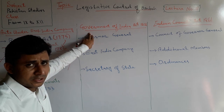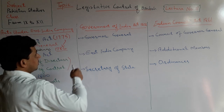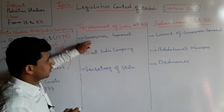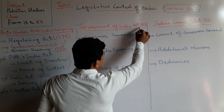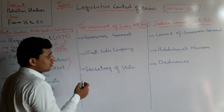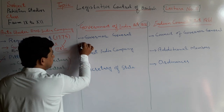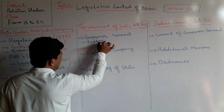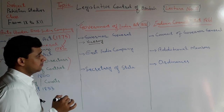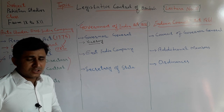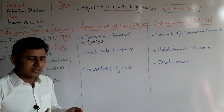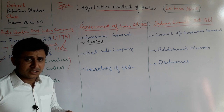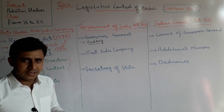After the 1857 War of Independence, the British formed their own acts and laws. According to the Government of India Act 1858, the Governor General was given another name and title: Viceroy. The Governor General was now under the Crown, whereas before this act the Governor General had been under the British East India Company.